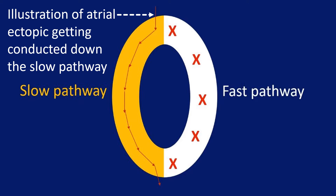AVNRT depends on dual AV nodal pathways — the slow pathway and the fast pathway — for the reentrant circuit. The fast pathway conducts faster but has a longer refractory period and recovers later. The slow pathway has slower conduction but recovers earlier due to its shorter refractory period. An appropriately timed atrial ectopic beat can find the fast pathway refractory and get conducted down the slow pathway.